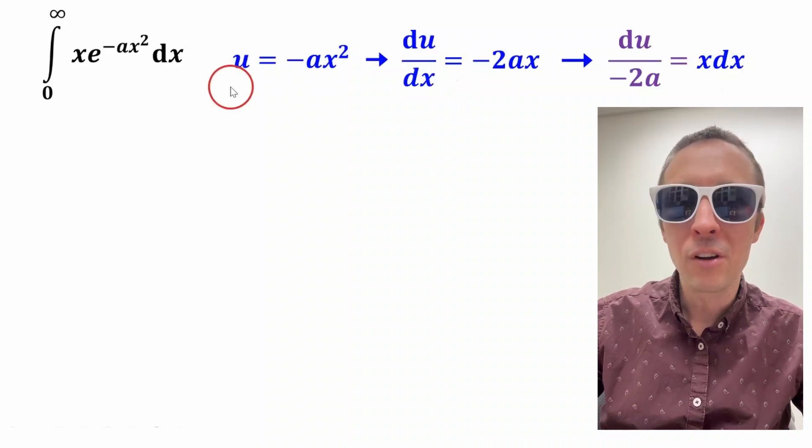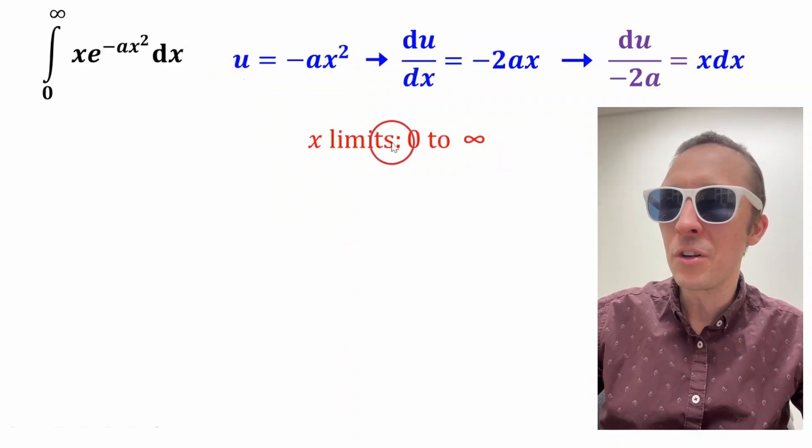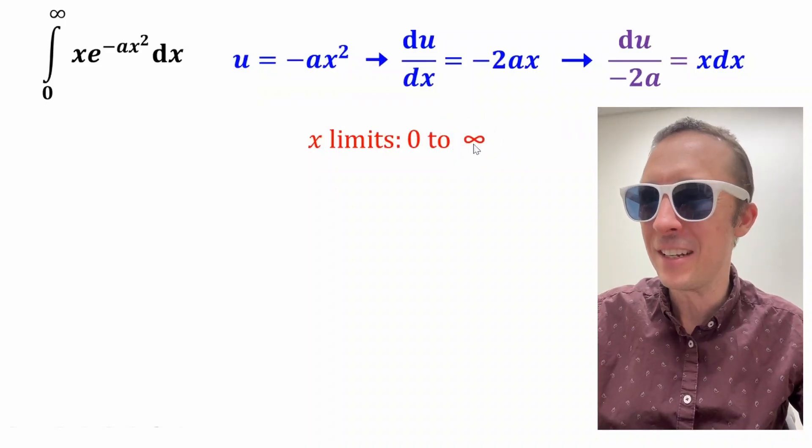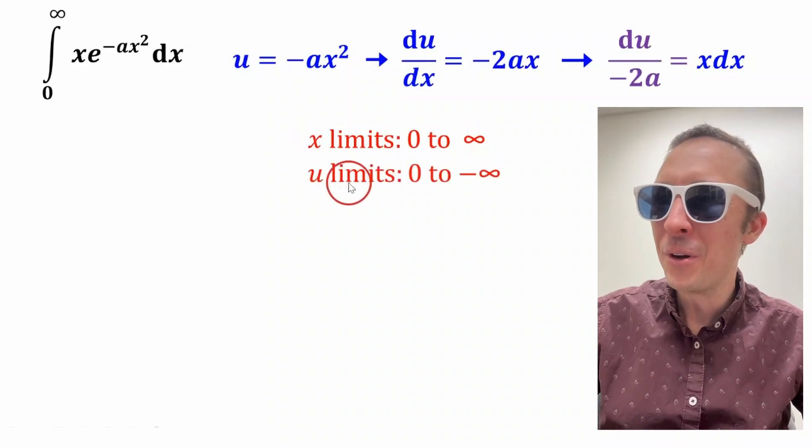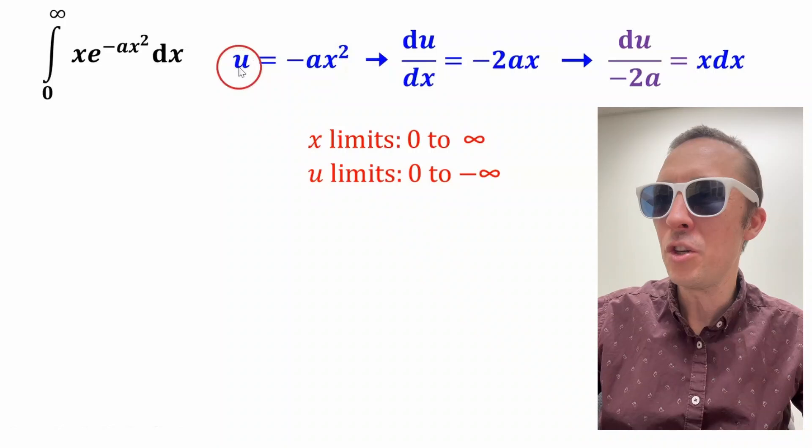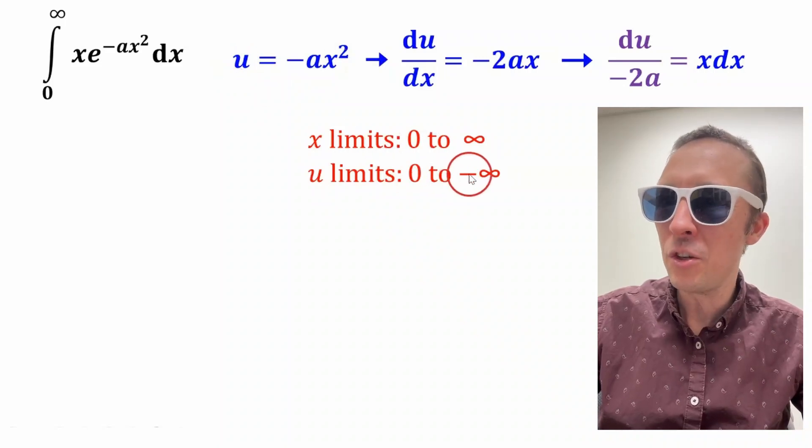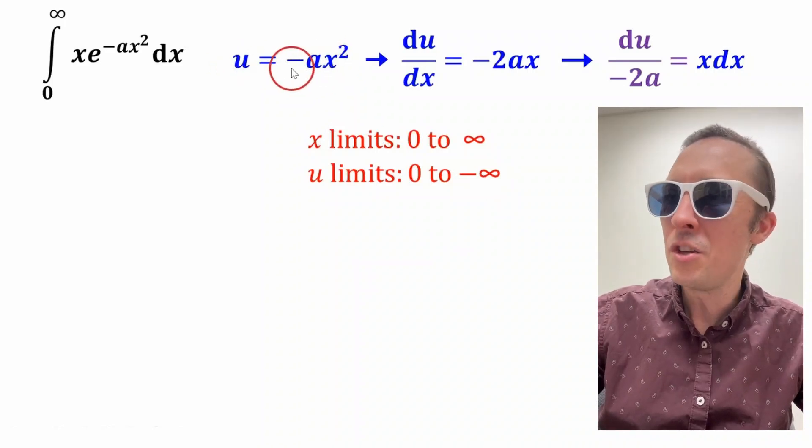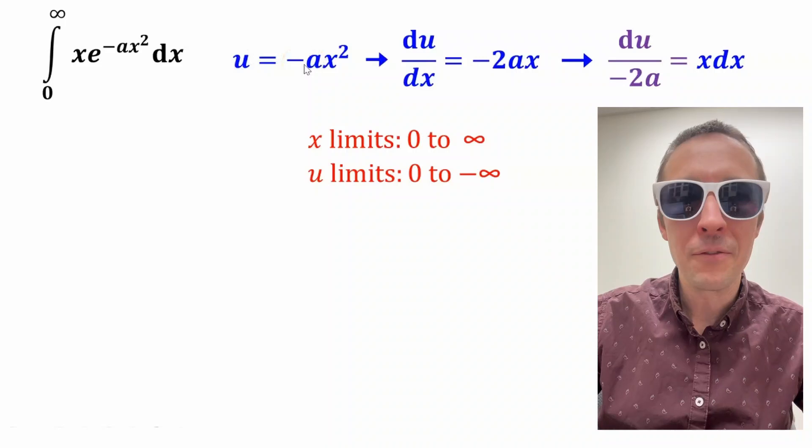Now, in terms of our limits, x is going to go from zero to infinity. This is a pretty lame infinity symbol. Anyways, u will go from zero, because if you plug in zero for x, u is zero, to negative infinity, because as x goes to infinity, u is going to go to negative infinity, right?